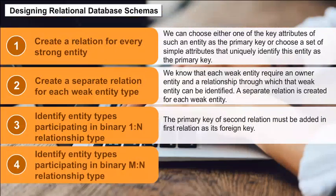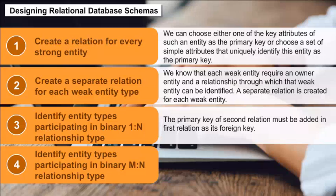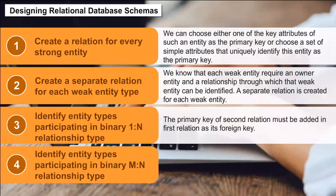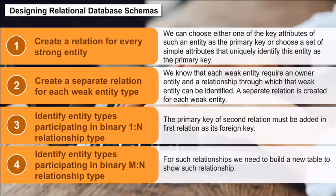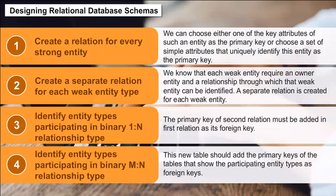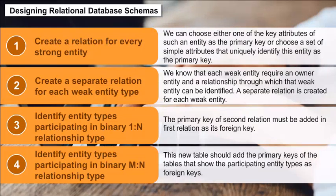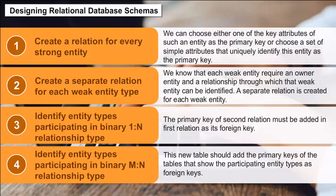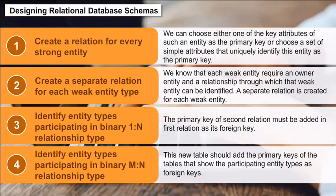4. Identify entity types participating in binary many-to-many relationship type — for such relationships, we need to build a new table to show the relationship. This new table should add the primary keys of the tables that show the participating entity types as foreign keys.